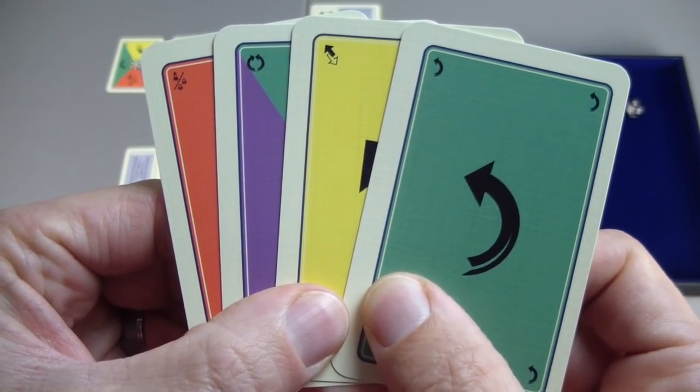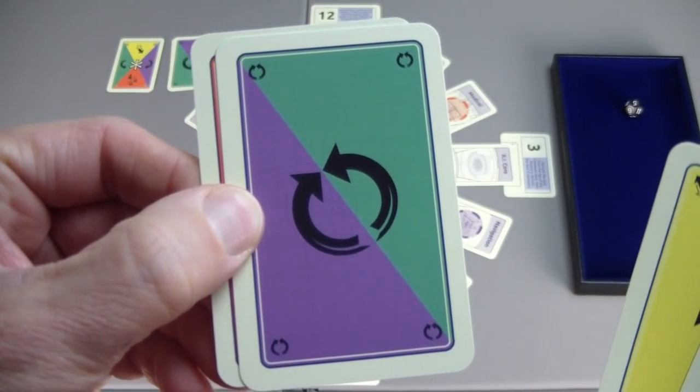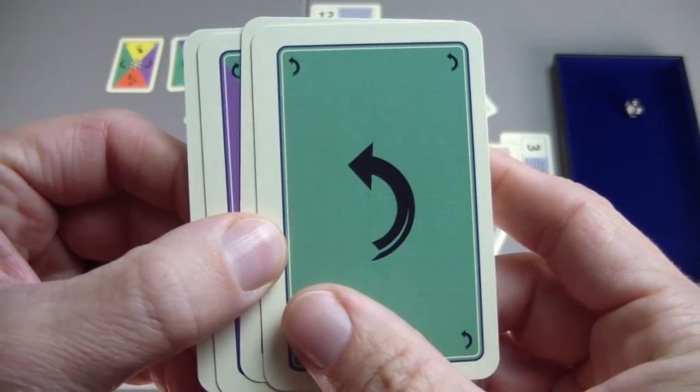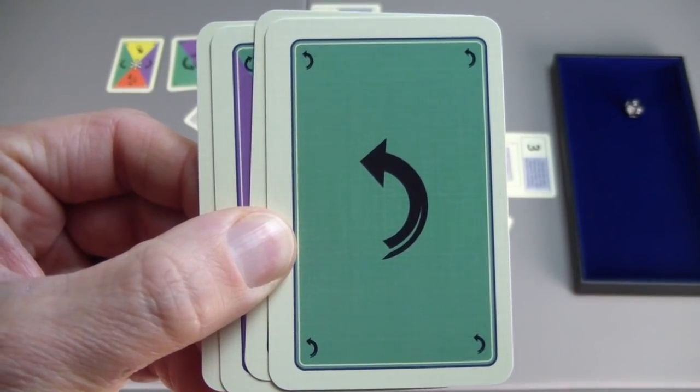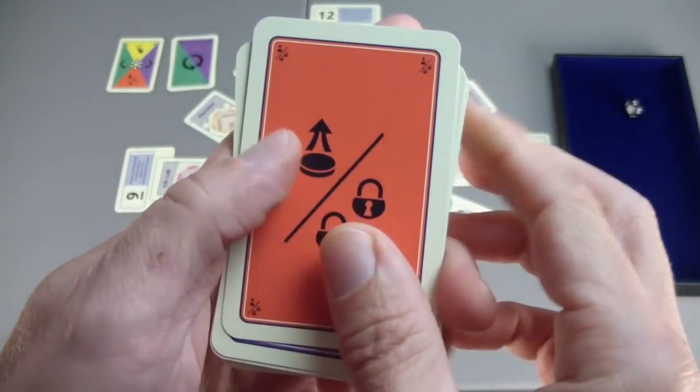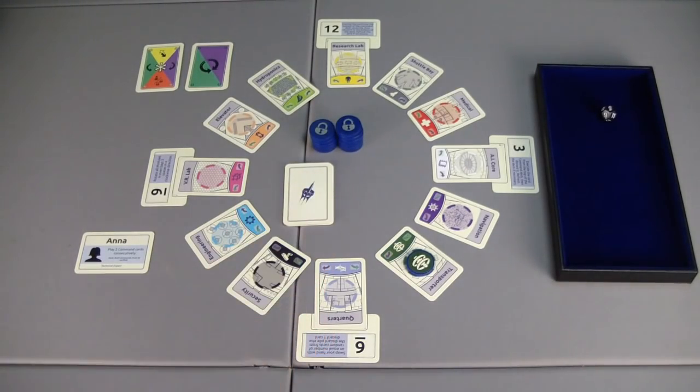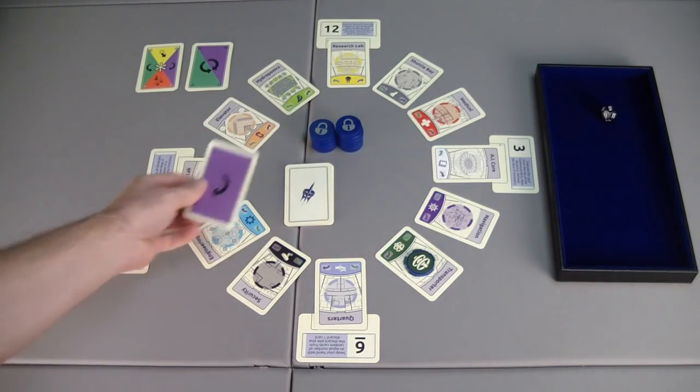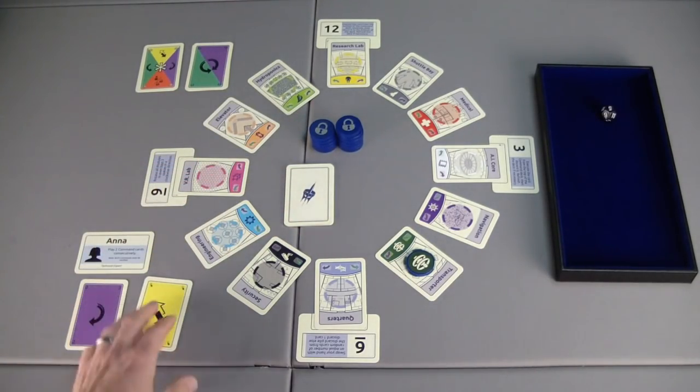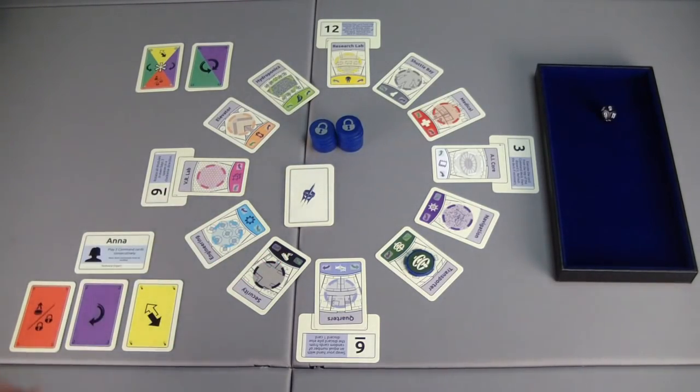When playing solo, you remove these four cards. You remove one of the deploy and lock cards, one of the rotate any direction cards, one of the swap cards, and one of the move anti-clockwise cards. Once those are removed, it'll leave you with ten cards in your command deck. Finally, we draw three cards to form our hand. We have a rotate clockwise, a swap, and a deploy or lock card.